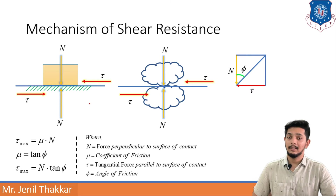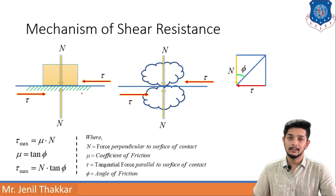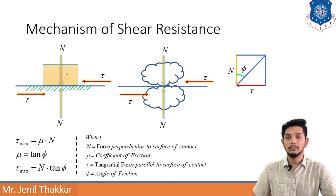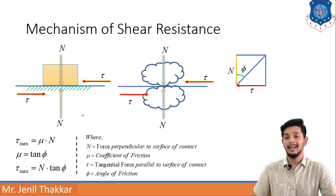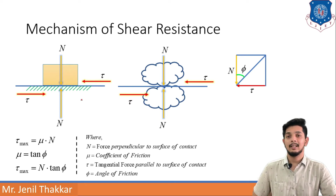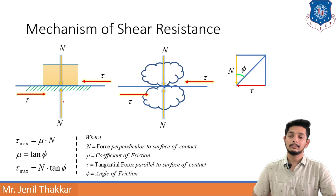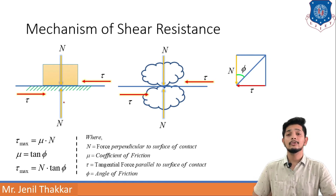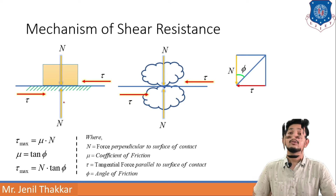Let us understand shear strength numerically. Tau max is reached when the body is about to move, representing maximum stress, after which the body starts moving. Tau max can be written as mu times N, where mu is the coefficient of friction and N is the normal force. From friction theory, mu equals tan(phi), where phi is the angle of friction. Therefore, tau max can also be written as N times tan(phi). This is the basic mechanism of shear resistance.